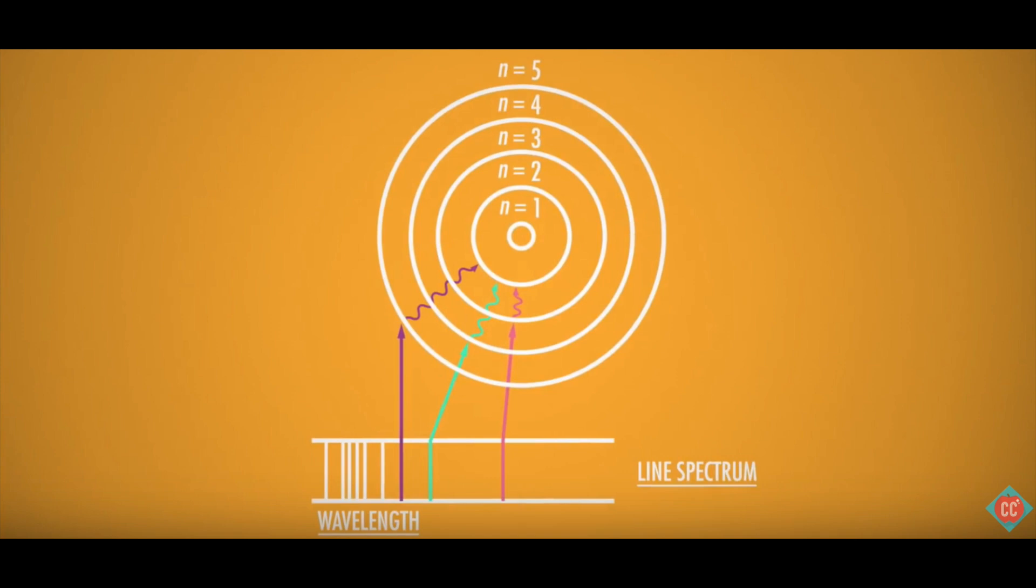An electron in a stationary state does not emit radiation. Radiation is emitted or absorbed only when electrons transition between orbits.